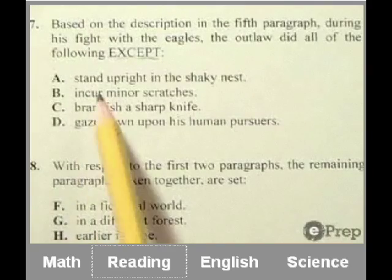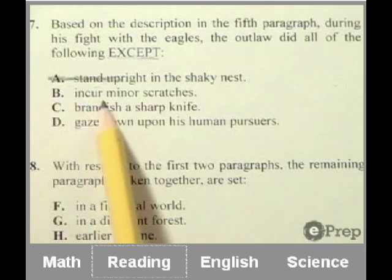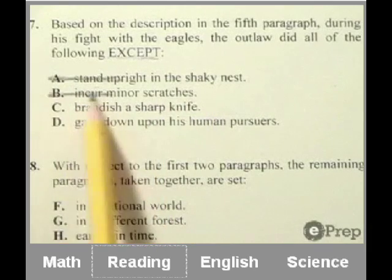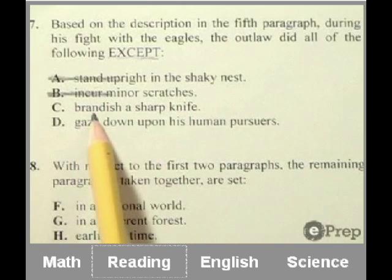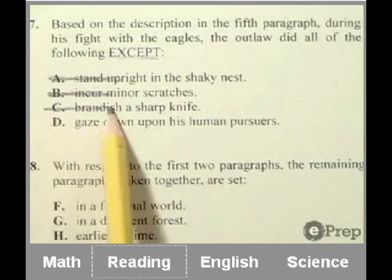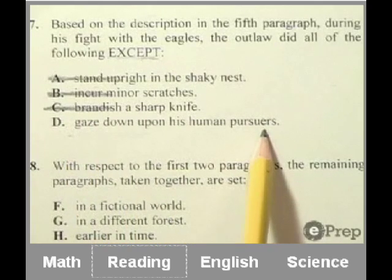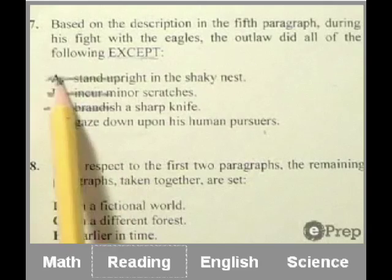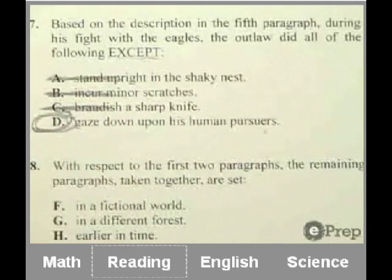So let's go back to the answer choices. I think I've read enough. Did he stand upright in the shaky nest? Yes. Did he incur minor scratches? Yes. Did he brandish a sharp knife? Yes. The only one that I didn't see is gaze down upon his human pursuers. I'm not going to bother reading anymore. I feel pretty comfortable eliminating A, B, and C. I would stick with D and move on quickly.